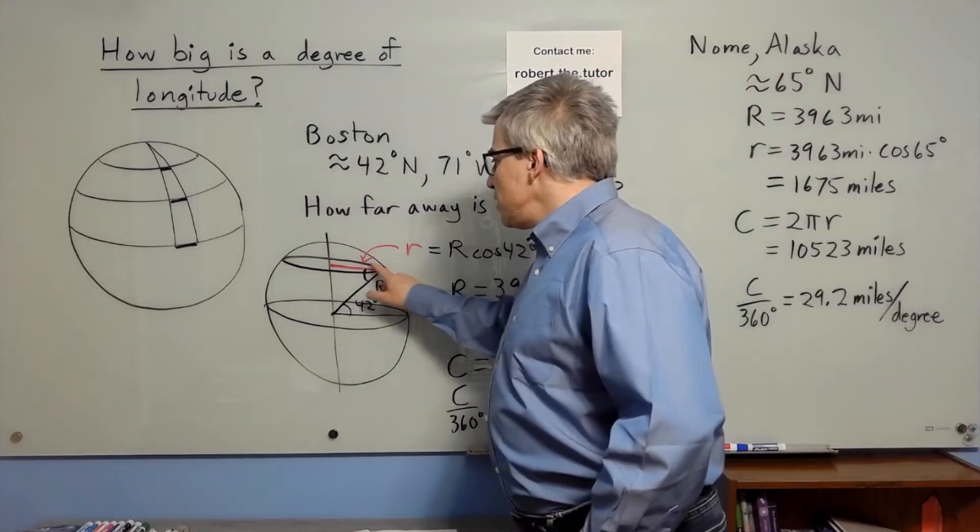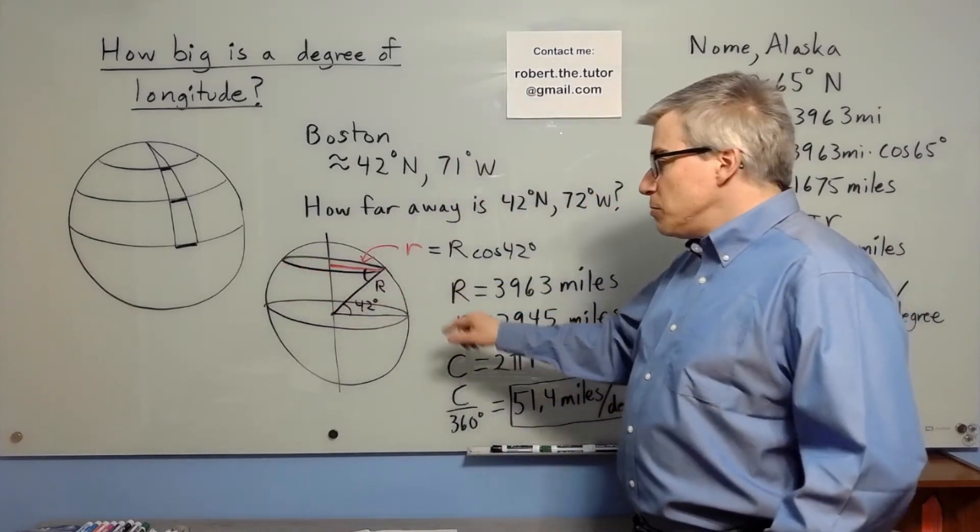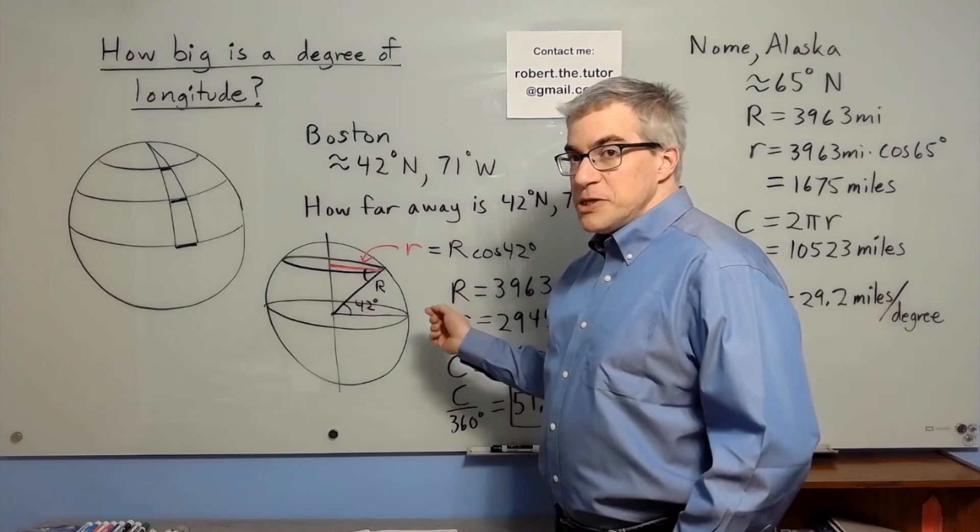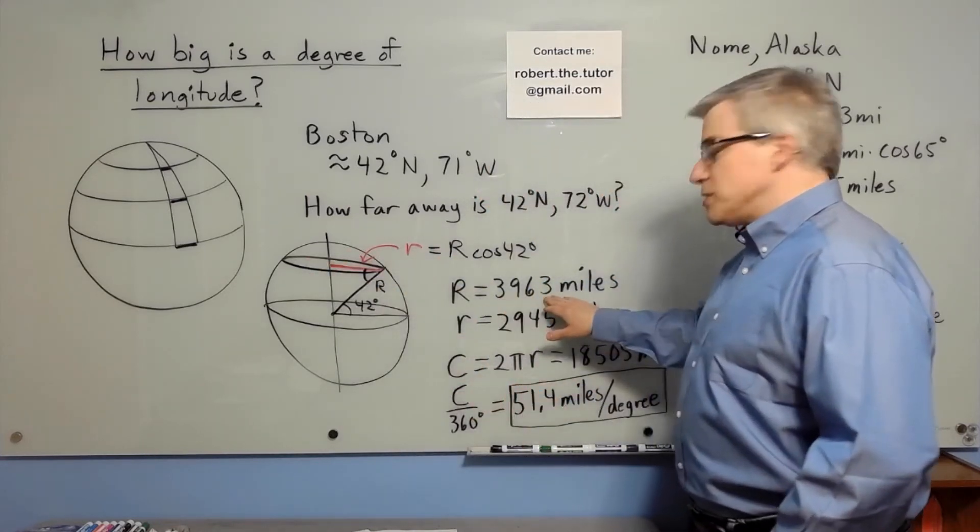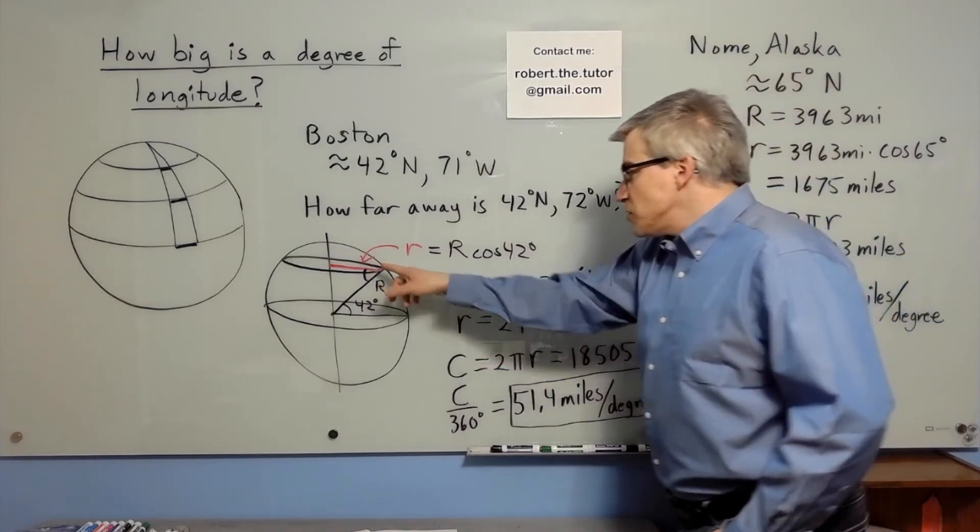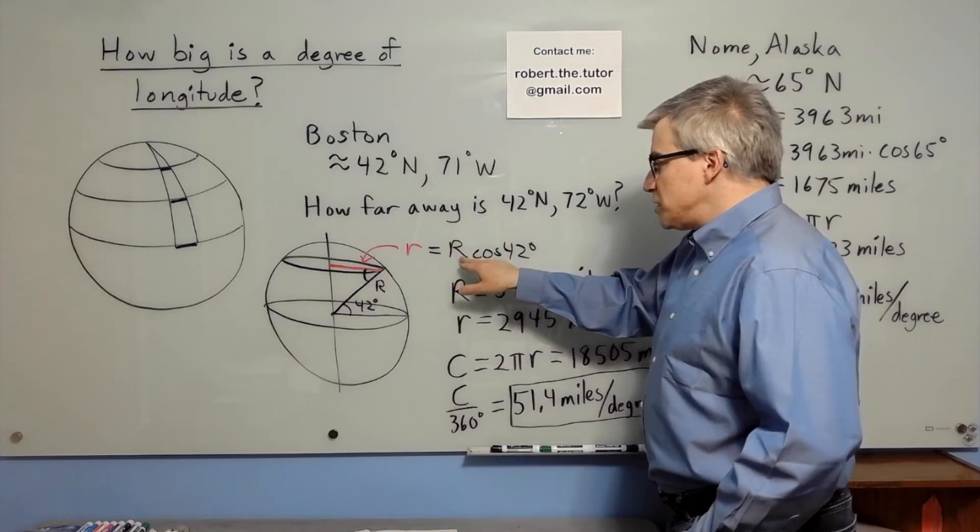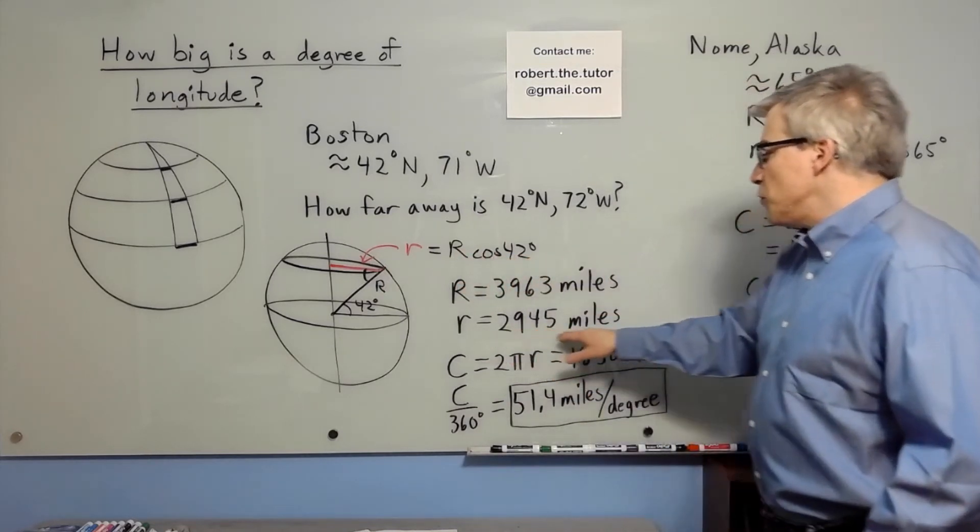So we're talking about this circle at 42 degrees north being cut into 360 pieces. So we need to know how big that circle is. The radius of the Earth is 3963 miles. The radius of that circle is radius of the Earth cosine 42 degrees, which is 2945 miles.